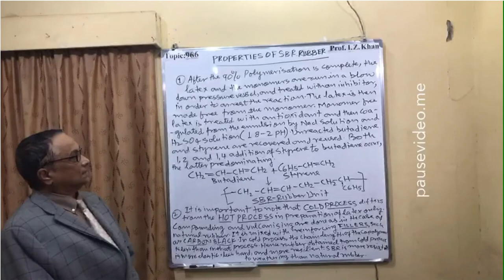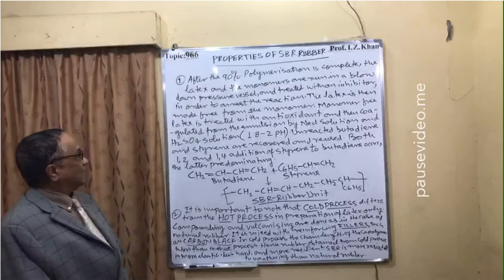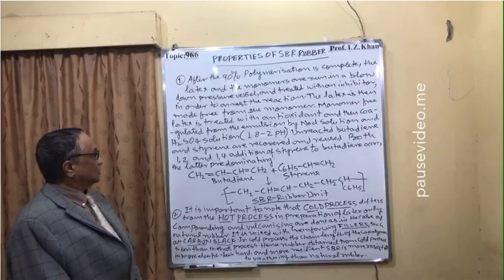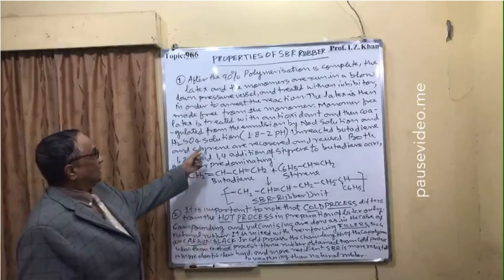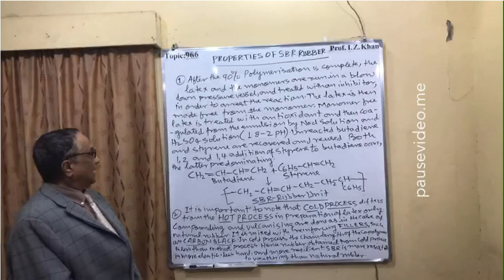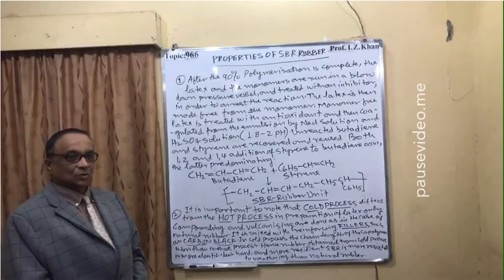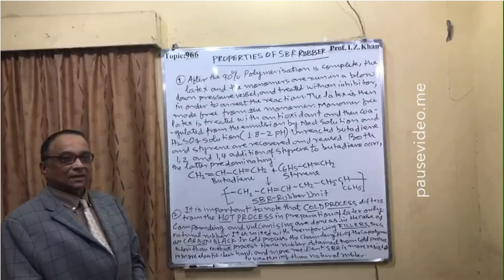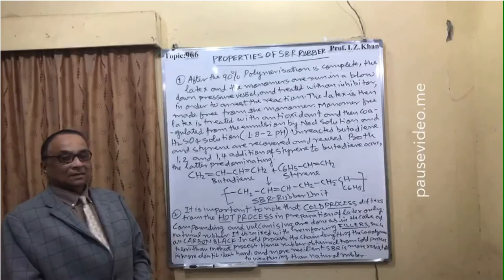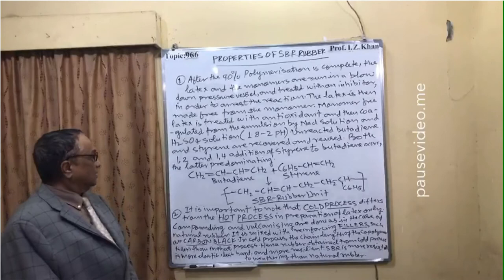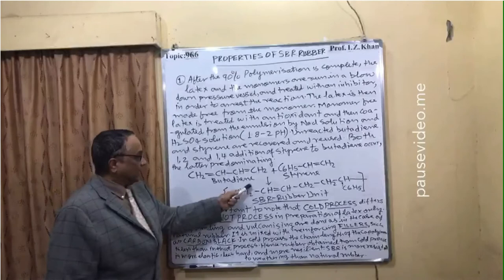The latex is then made free from monomer. The monomer-free latex is treated with antioxidant and then coagulated from the emulsion by sodium chloride solution and H₂SO₄ solution at a pH of 1.8 to 2, meaning it is highly acidic. Unreacted butadiene and styrene are recovered and reused. Both 1,2 and 1,4 addition of styrene to butadiene occur, with the 1,4 addition predominating.